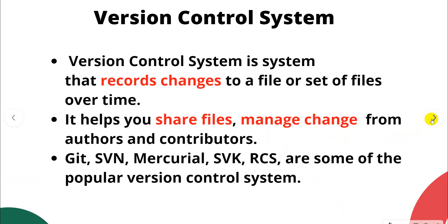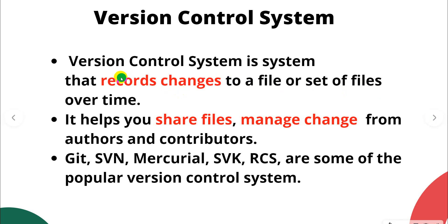First, before talking about version control system, GitHub and Git, it is very important that we know what a version control system is. A version control system is a system that records changes to a file or set of files over time. It helps to share files and manage changes from authors and contributors.